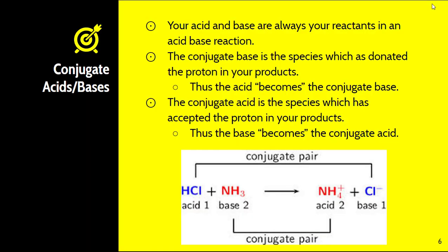Your acid and your base are always your reactants in an acid base reaction. There are other terms that we use to describe our products. The conjugate base is the species which has donated the proton in your products. Thus the acid becomes the conjugate base. If we look at the bottom here, our conjugate pair, we have HCl which is our acid. Cl minus then is our conjugate base because it has donated the proton. The proton is missing from it, therefore it is a base.